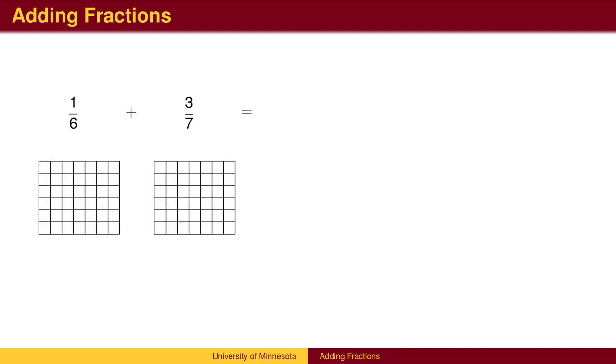One approach is to think of the numerators and denominators as rows and columns of a rectangular grid. The first fraction is represented by 1 of the 6 rows, the second fraction by 3 of the 7 columns.